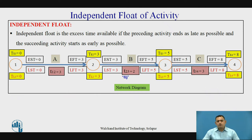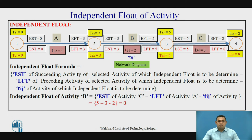Independent float is the excess time available if the preceding activity ends as late as possible and the succeeding activity starts as early as possible. The formula is: EST of the succeeding activity of the selected activity, minus LFT of the preceding activity of the selected activity, minus the activity duration.